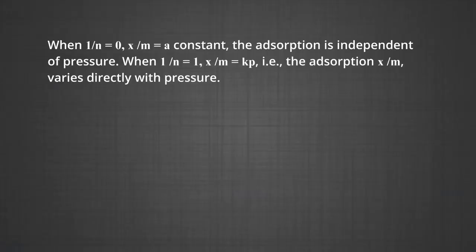When 1/n = 0, x/m becomes a constant — adsorption is independent of pressure. When 1/n = 1, x/m = k·p — adsorption varies directly with pressure. Both conditions are supported by experimental results. However, the experimental isotherms always seem to approach saturation at high pressure, which cannot be explained by the Freundlich isotherm — thus it fails at high pressure.